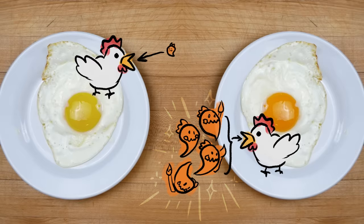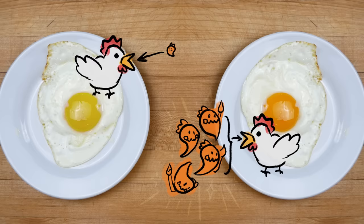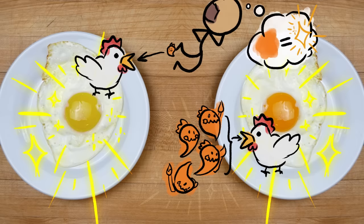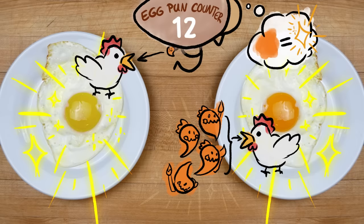But you can't taste carotenoids. So, eggs with carotenoid-packed yolks don't actually taste different from eggs with yolks low in carotenoids. Yet, based on the color, our brains egg-spect them to taste different.